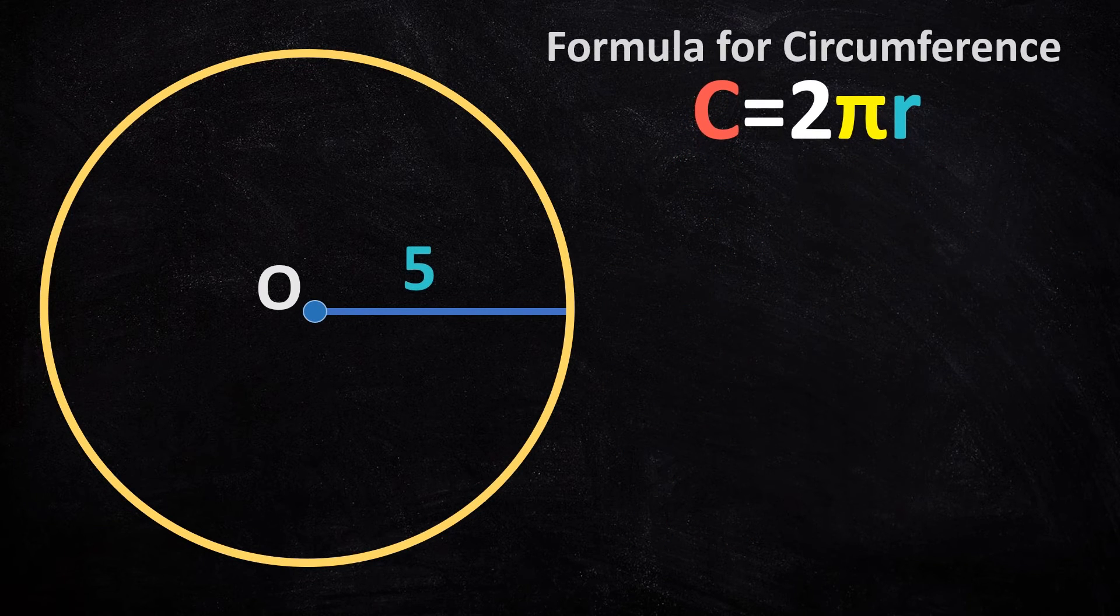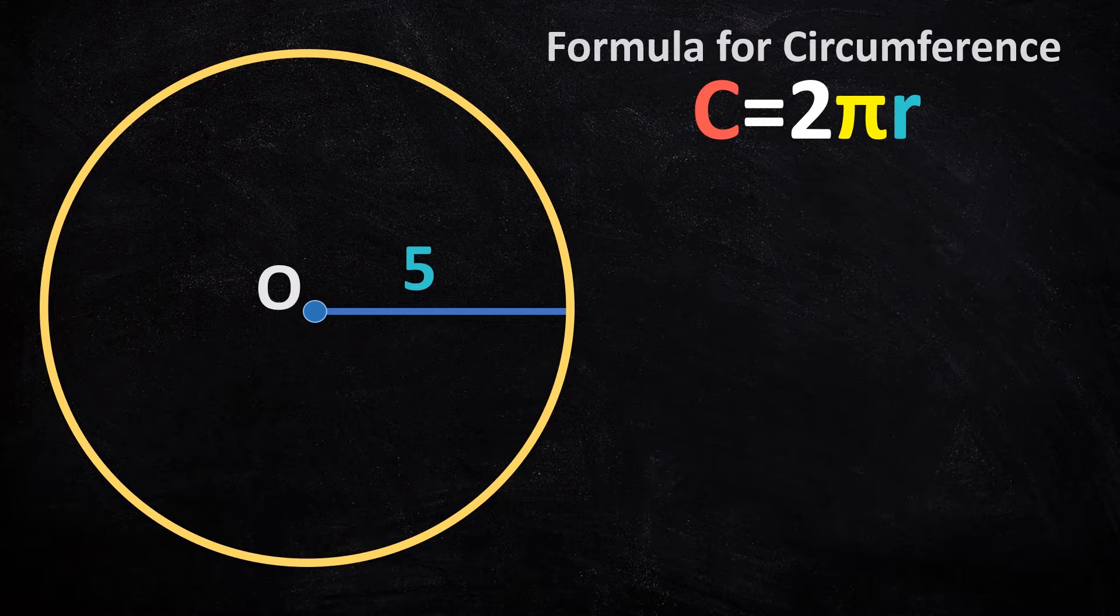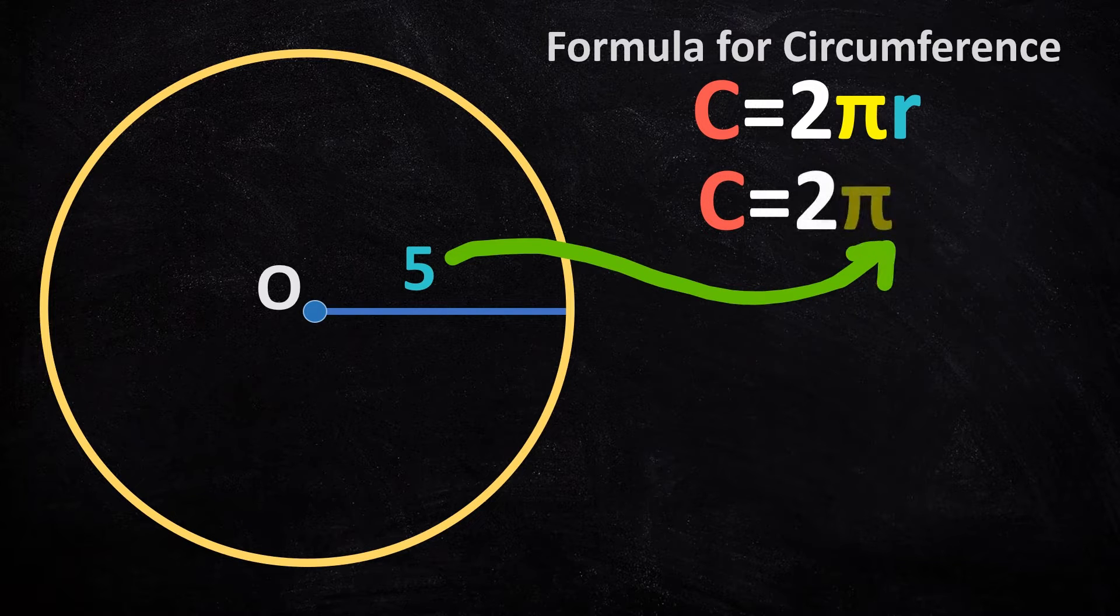Now, let's take a look at this circle which has a radius of 5. This will take no time. Let's put the radius into the formula. We have circumference equals 2 times pi times 5.